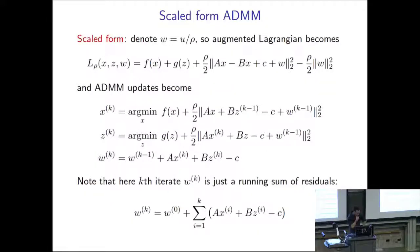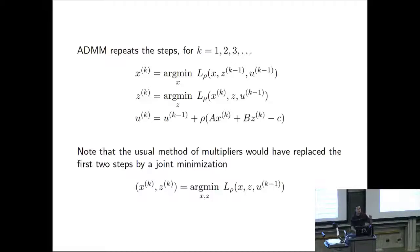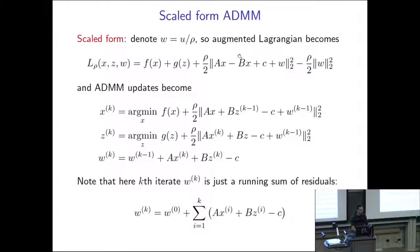We typically don't use ADMM in the form described. There's a more convenient form called scaled form. The only difference is that we define a modified, scaled dual variable w = u/ρ.